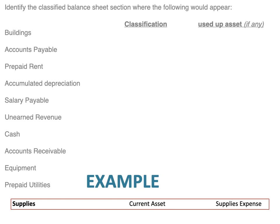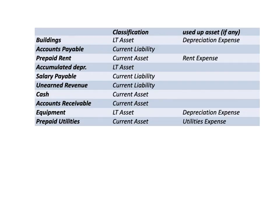Let's take a look at what we have here — here are the answers. Buildings, of course, would be a long-term asset. Because it is an asset that gets used up over time, we depreciate buildings and it's called depreciation expense. Accounts payable would be a current liability — we expect to pay accounts payable off within a year, if not sooner. Prepaid rent is a current asset, and as it gets used up, we call that rent expense.